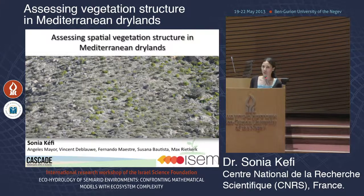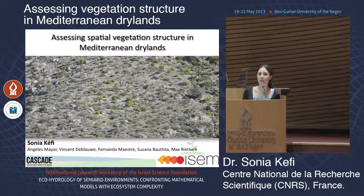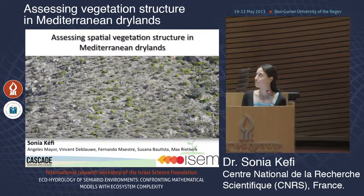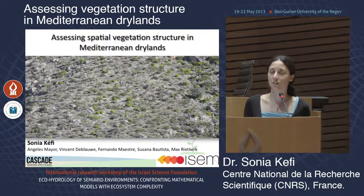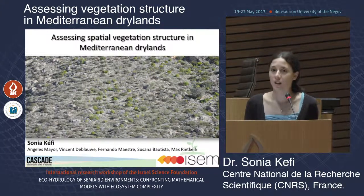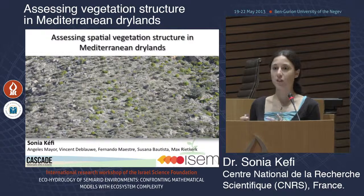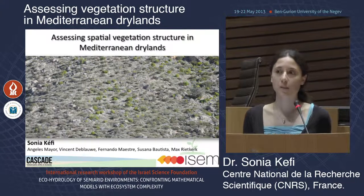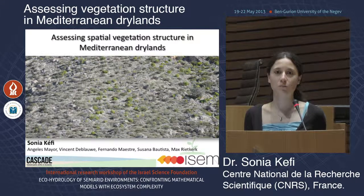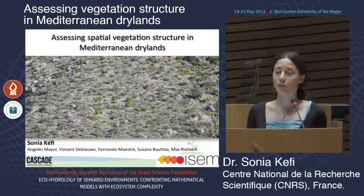Here is a picture of what it may look like — this is a picture taken in Spain, close to Alicante. One of the questions I'm trying to address in the last few years is: if I look at a dryland and the way the vegetation is spatially organized, does that tell me anything about the history of the system, the underlying ecological mechanisms, and also the resilience of the system to perturbations?